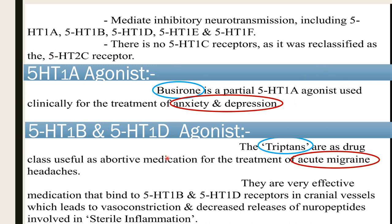5-HT1B and 5-HT1D: triptans are drugs useful as abortive medication for the treatment of acute migraine. Triptans are 5-HT1B and 5-HT1D agonists. They are very effective medications that bind to 5-HT1B and 1D receptors in cranial vessels, leading to vasoconstriction and decreasing the release of neuropeptides involved in sterile inflammation.